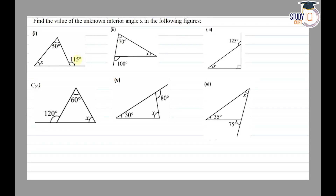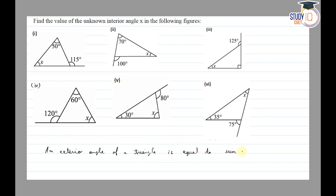The theorem states: the exterior angle of a triangle is equal to the sum of its interior opposite angles. So the exterior angle is equal to the sum of the two interior opposite angles.